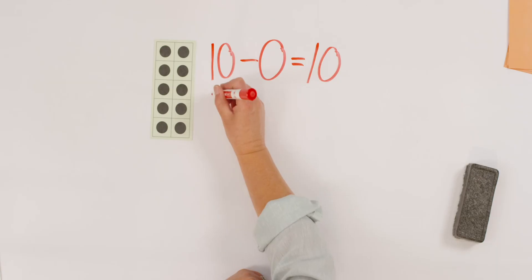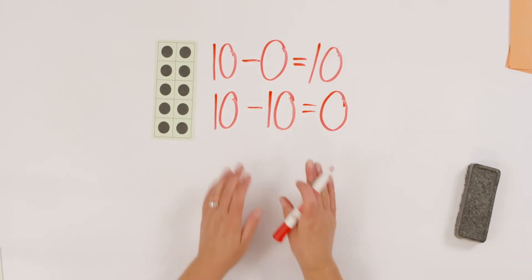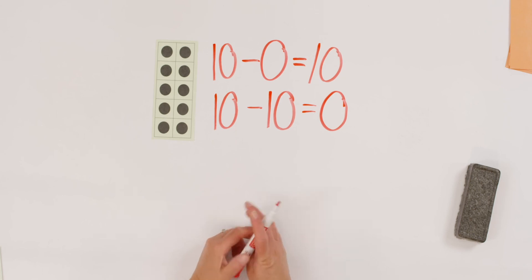Now, what would the other problem be if we could make another subtraction sentence? What if we took all the dots away? Let's write it. 10, take away all the dots. So, how many dots are all the dots? 10! 10, take away 10, is zero! How was that? Sometimes it's so fun to get zero as an answer. I think it is at least. Anyway, keep practicing your number bonds. I'll see you next time.